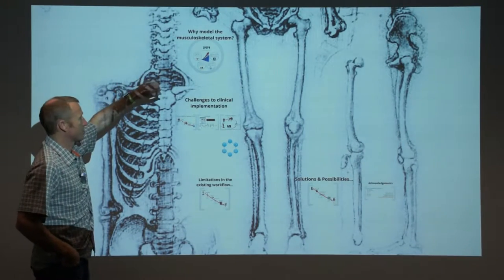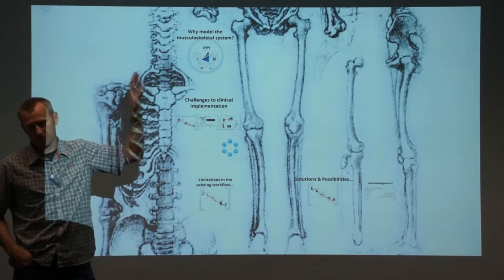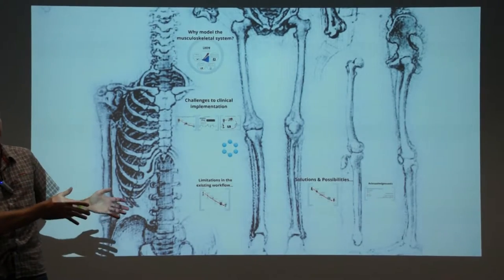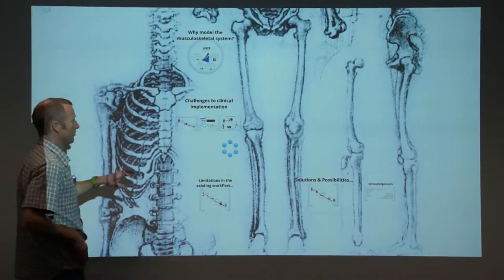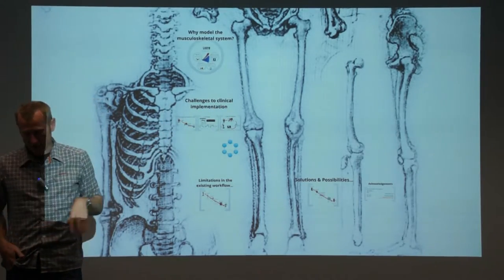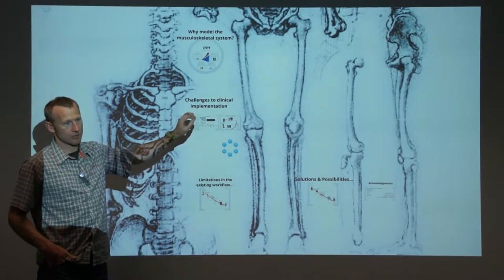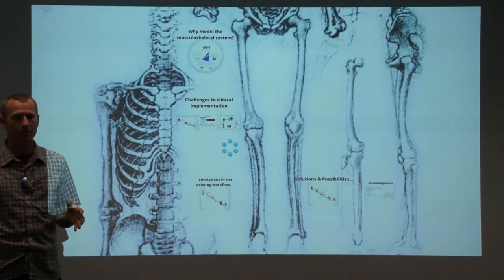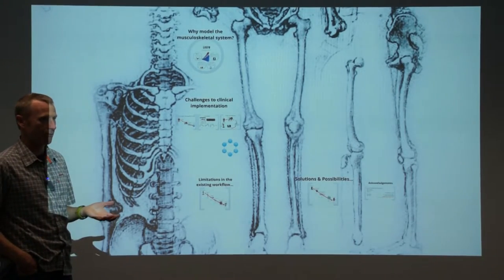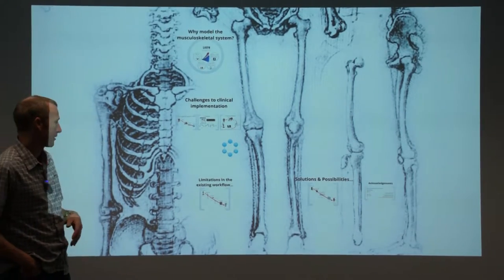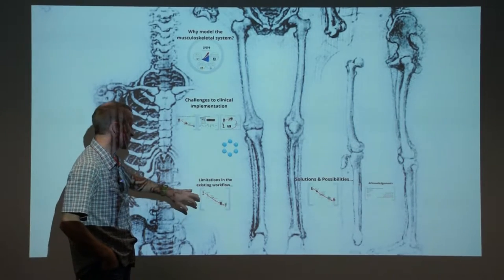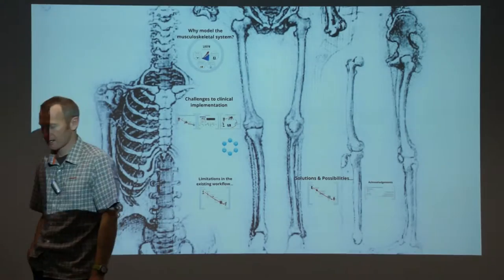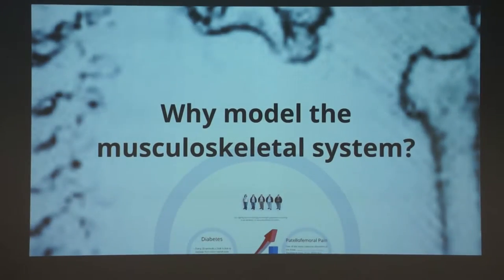We're going to talk about modeling the musculoskeletal system and the key clinical drivers. We're all about clinical translation — translating our work outside the lab and into the clinic. There are a key number of hurdles we need to address before we can get into the clinic, particularly when talking about translating computational models. I'll also talk about limitations of our existing workflow and then what the solutions and possibilities are.